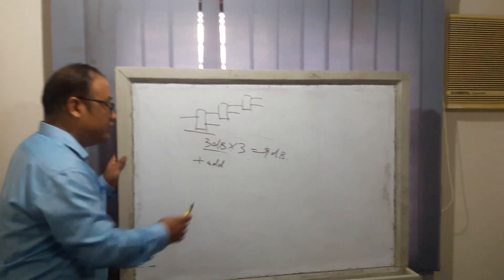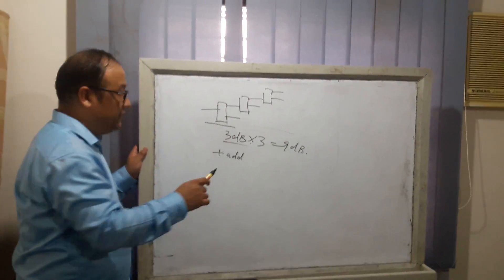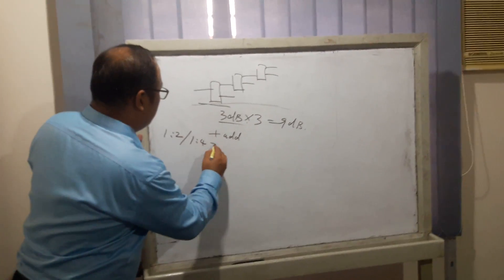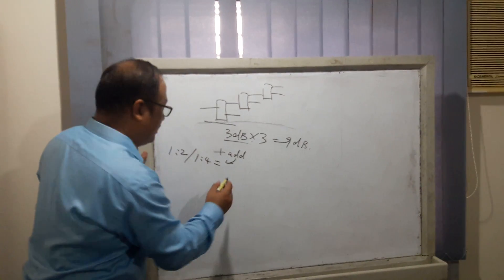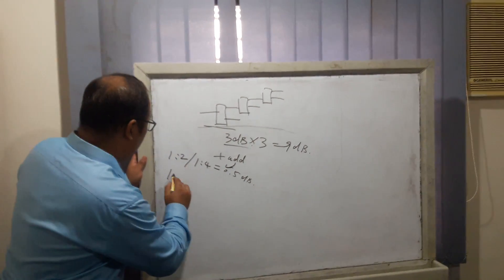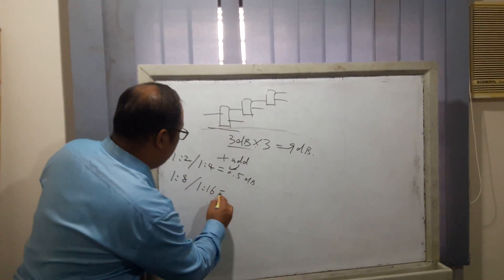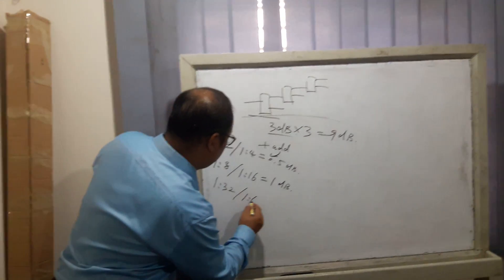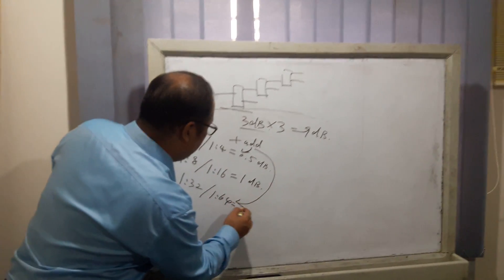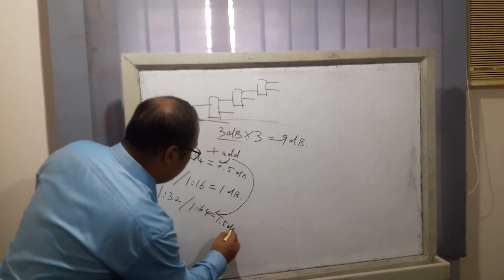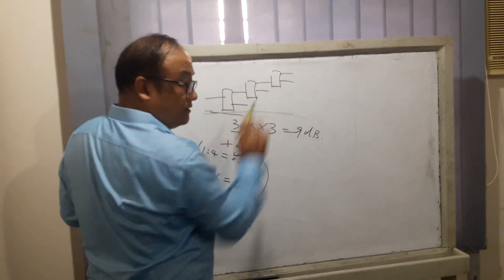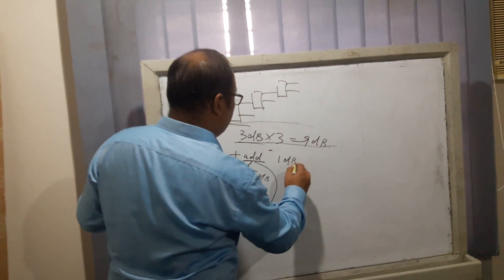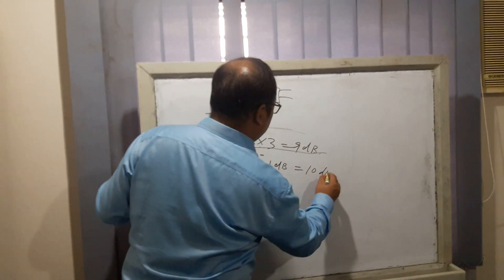Be aware that additional attenuation will get higher if the splitter ratio gets higher. For example, 1:2 and 1:4 have additional attenuation of about 0.5 dB, while 1:8 or 1:16 is about 1 dB. For 1:32 and 1:64, the additional attenuation is about 1.5 dB. So in this case, the 1:8 splitter has 9 dB plus additional 1 dB, totaling 10 dB loss.